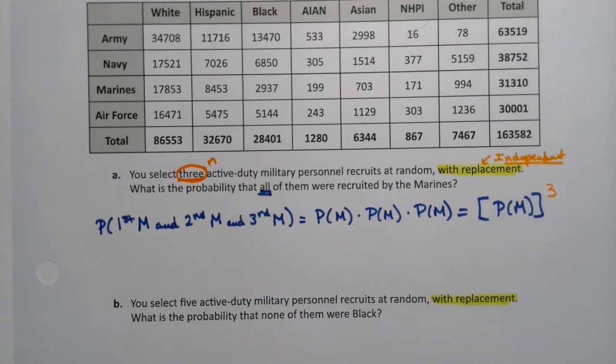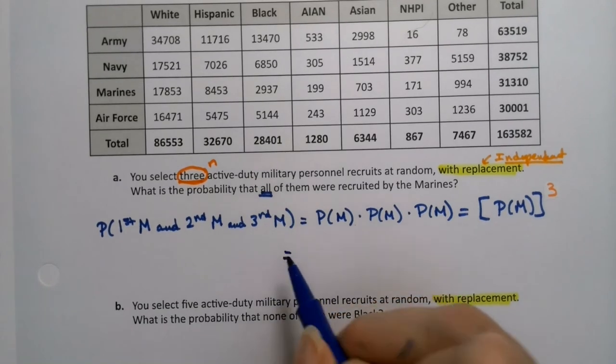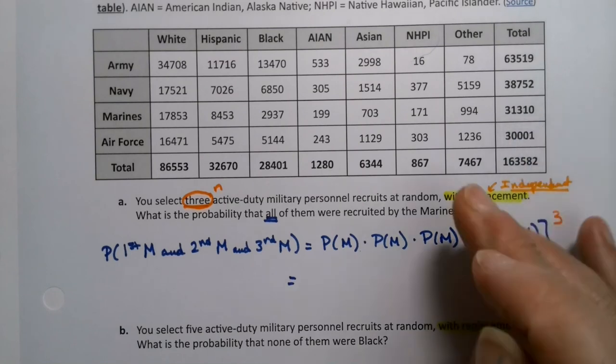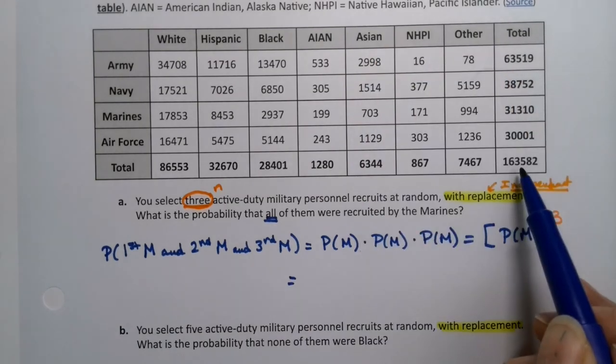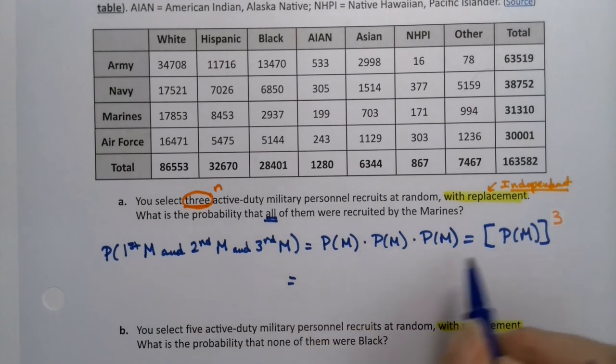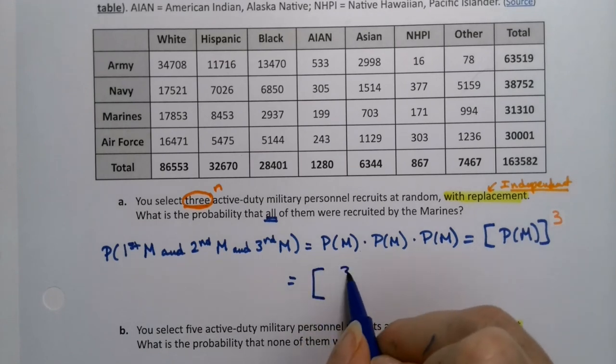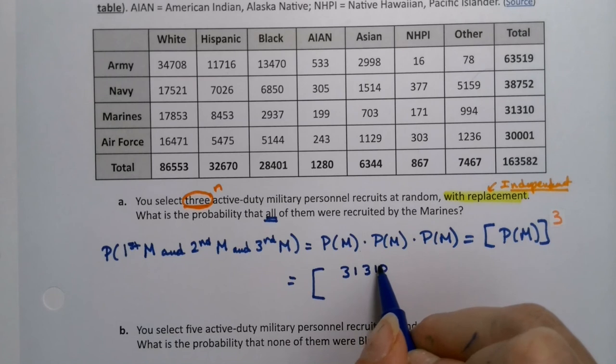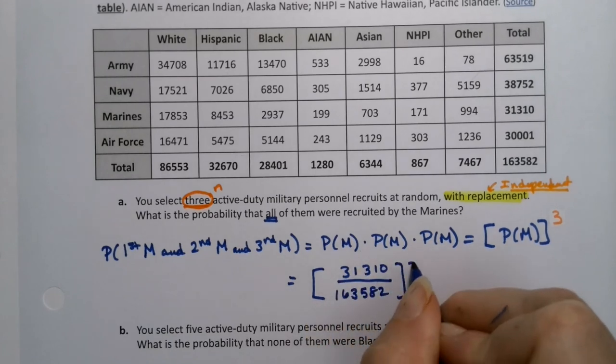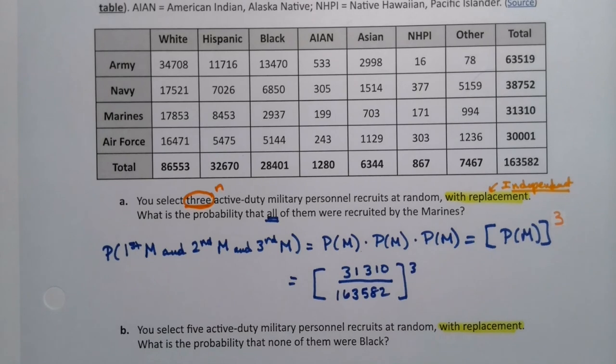Now what's the probability of Marine? The probability of Marine is 31,310 divided by 163,582. So we want, I'm just going to write it in the cubed form just because it's easier. So 31,310 divided by 163,582, and we cube it.